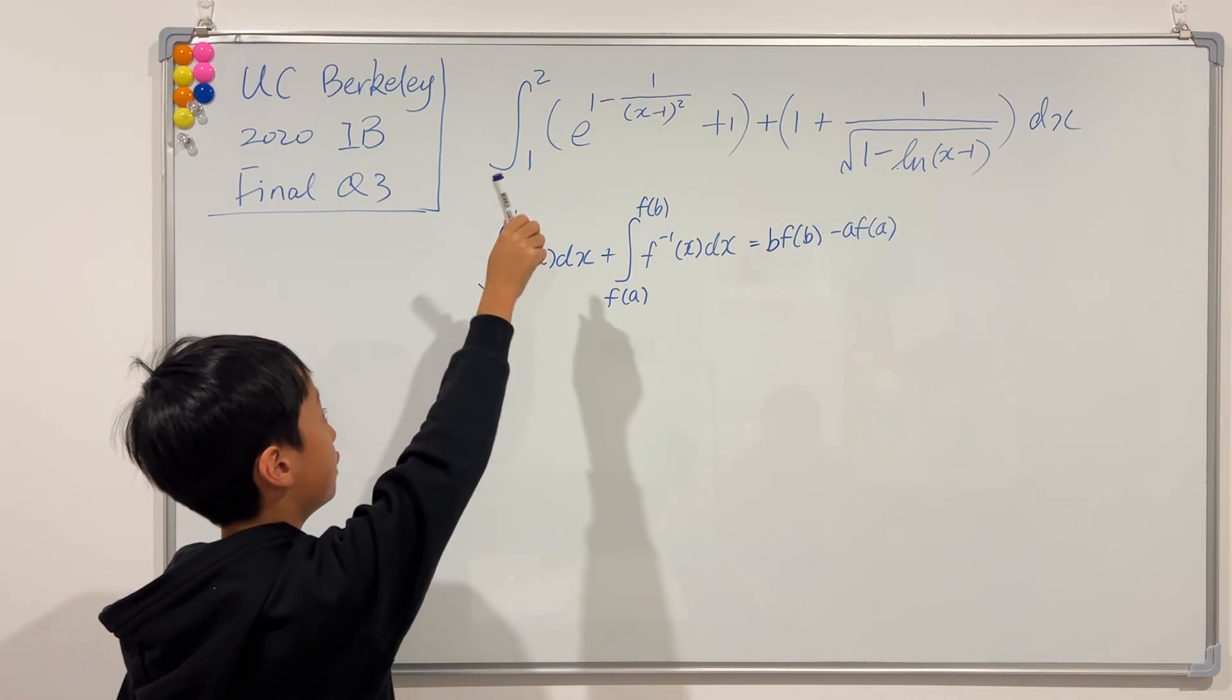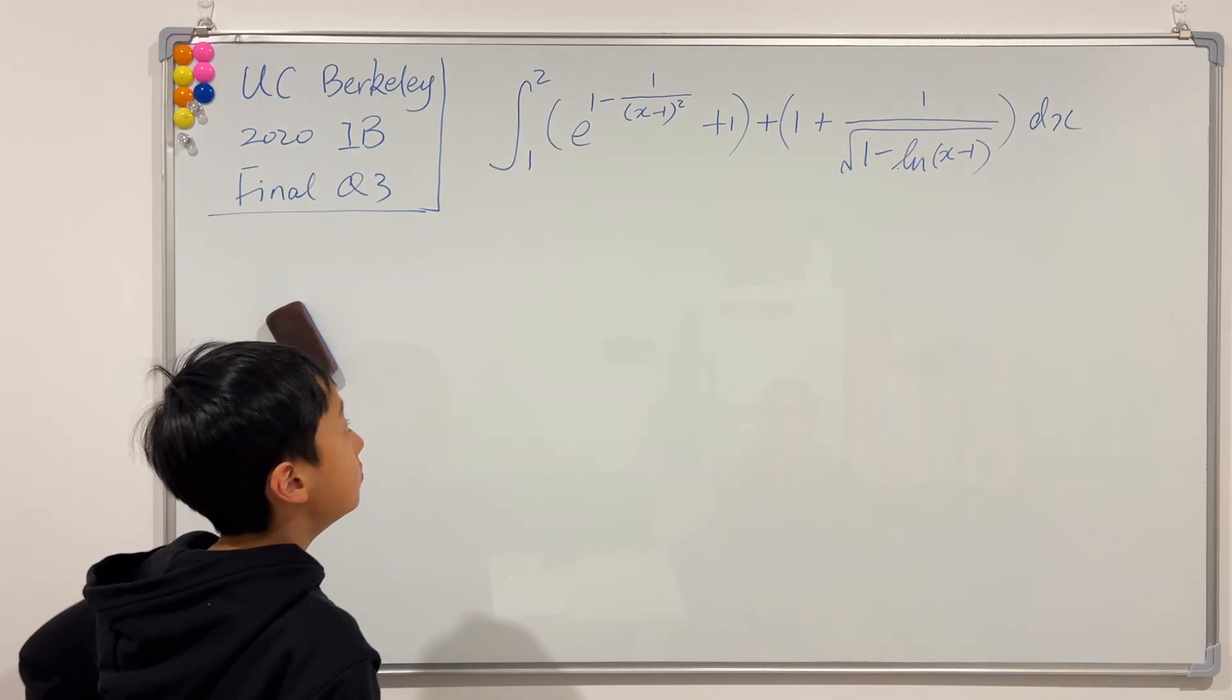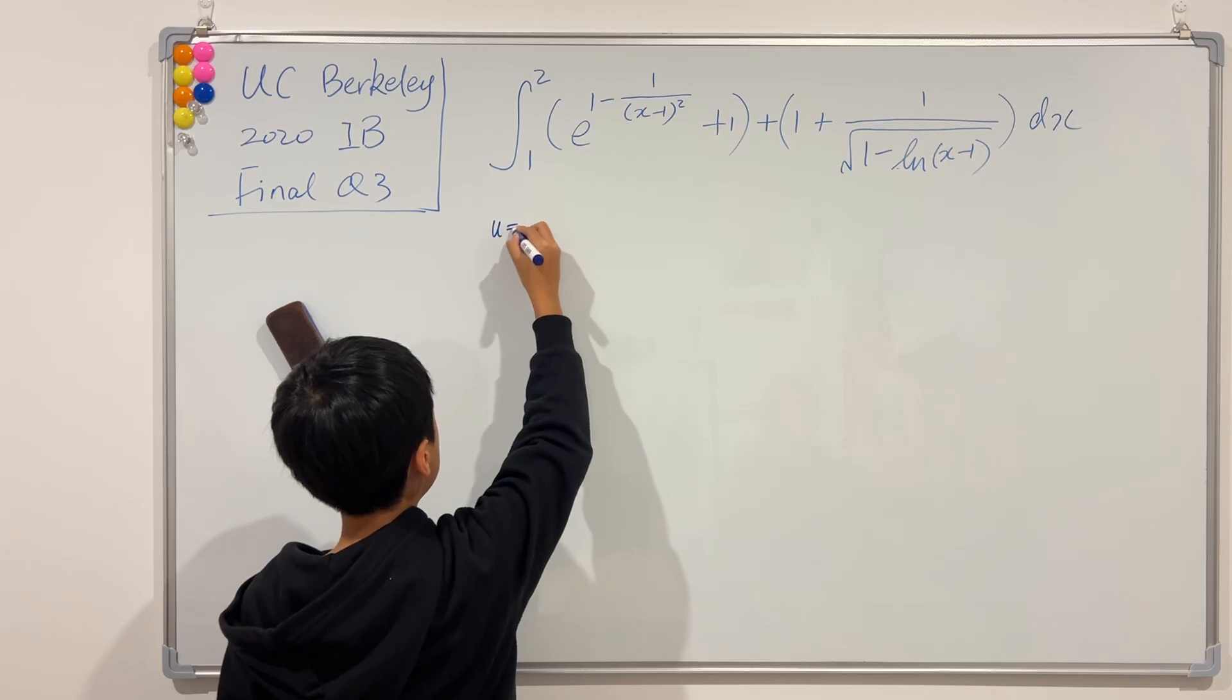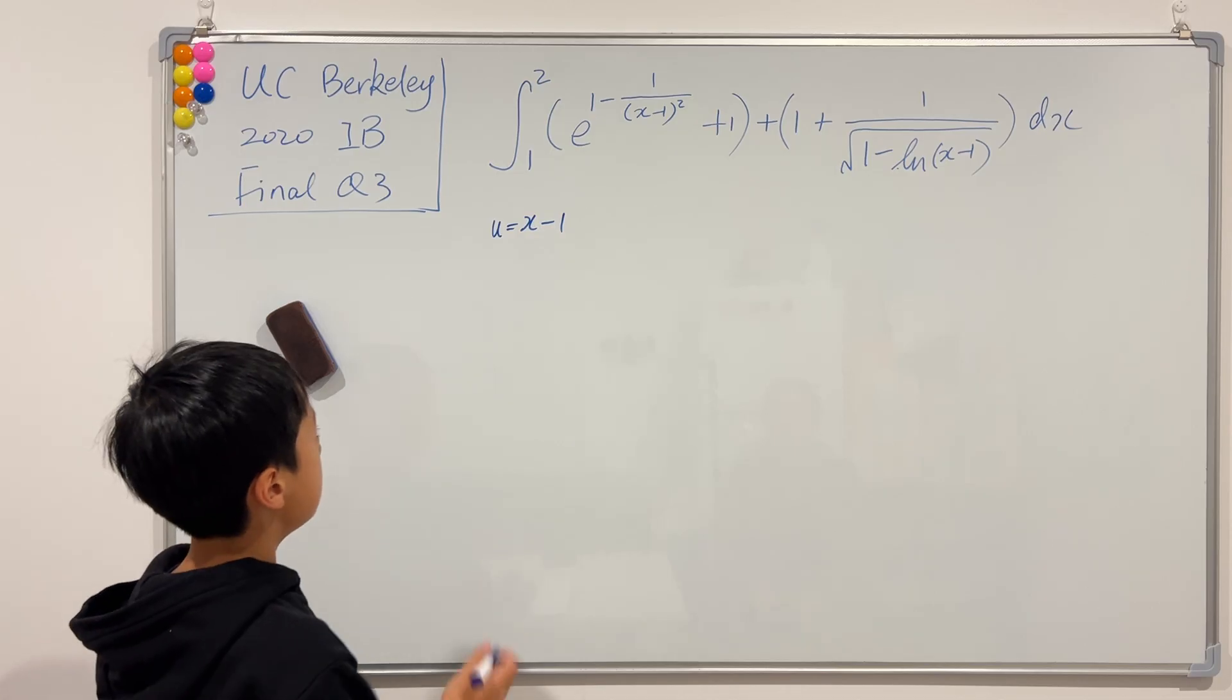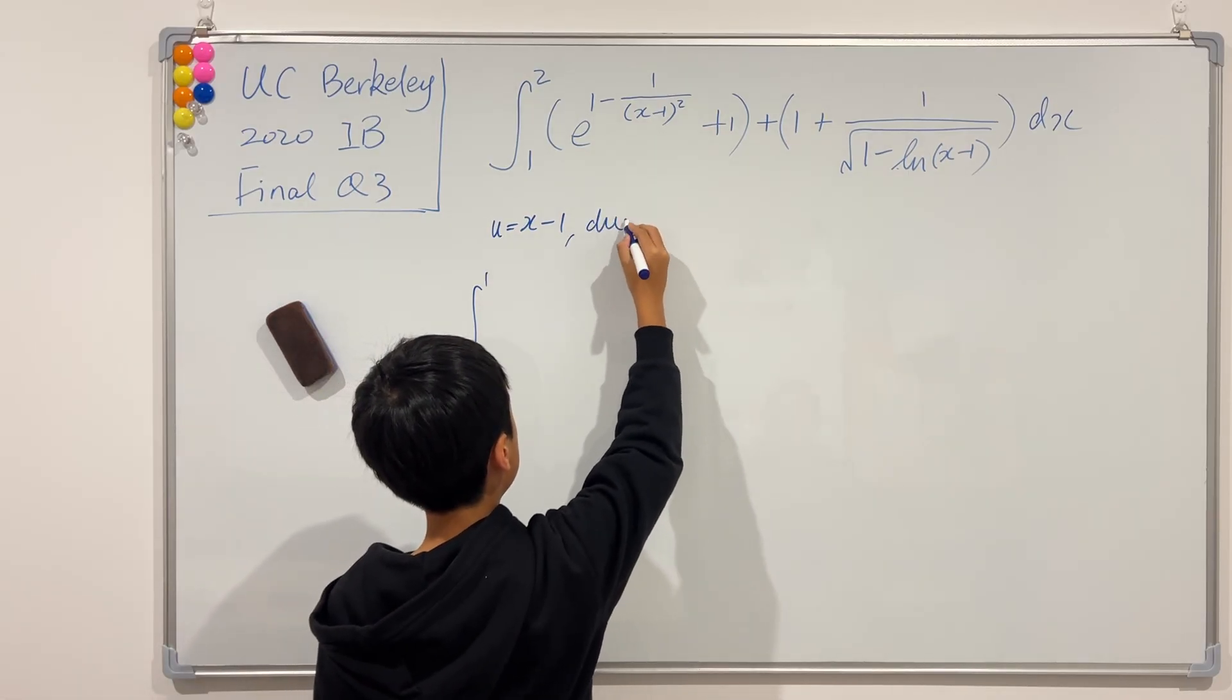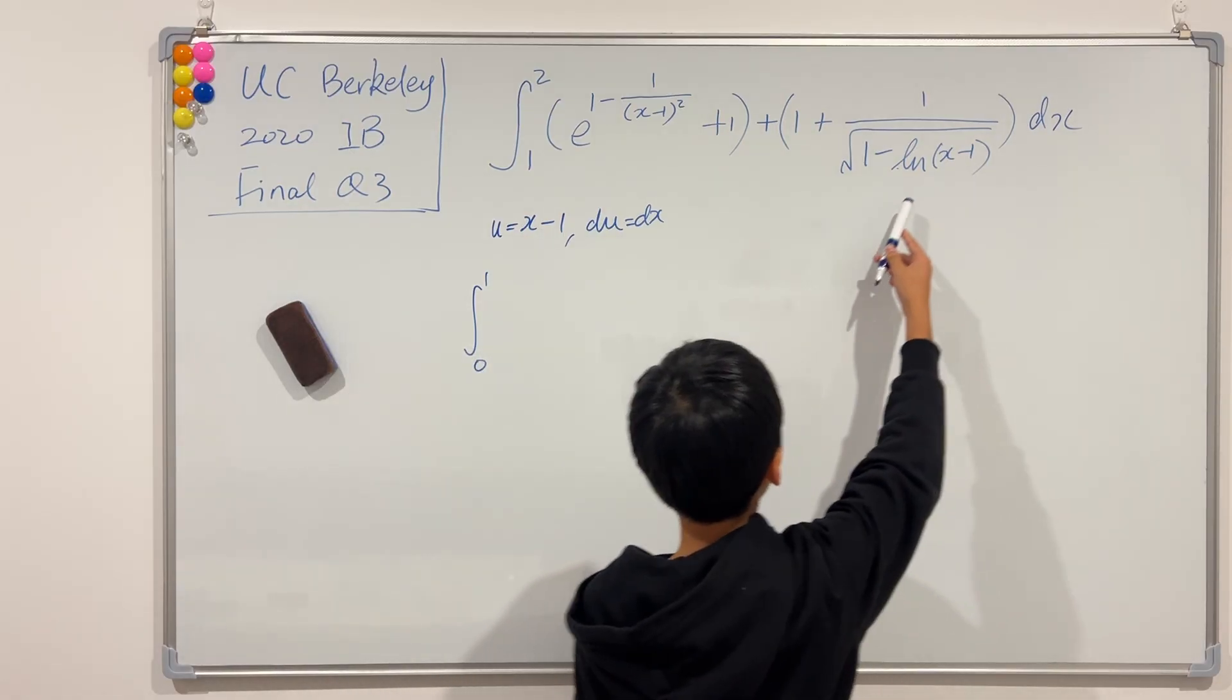Okay, so the first manipulation I'm going to do is just a simple u-substitution. I'm just going to let u be x minus 1, simple. And by common sense we know that the bounds will obviously change to 0 and 1, and we see that du is dx. Okay, so moving on to here, I'm going to move this fraction to the front.